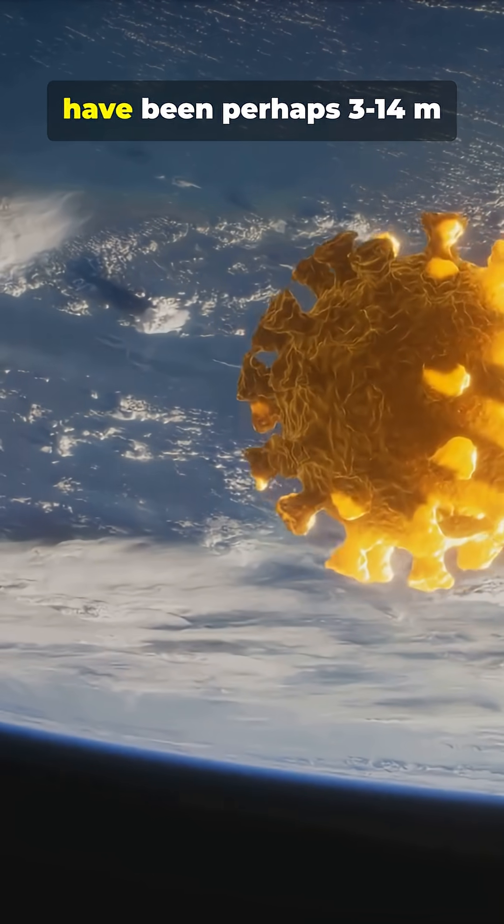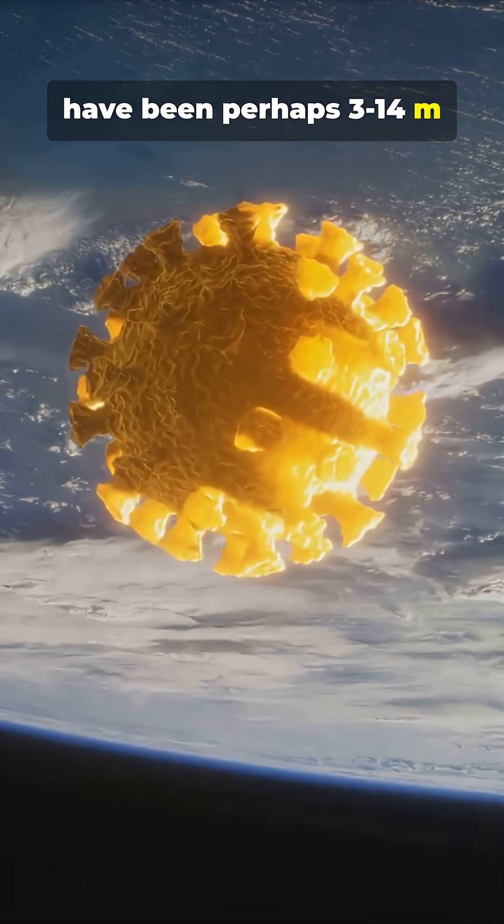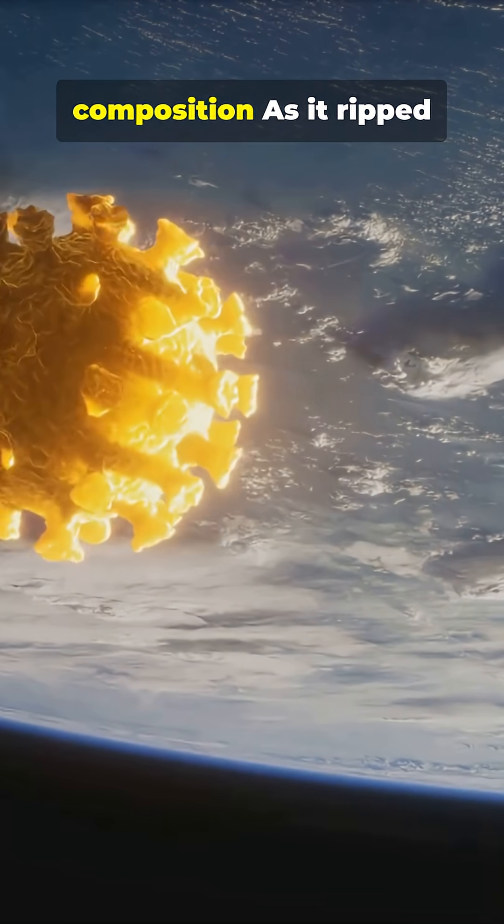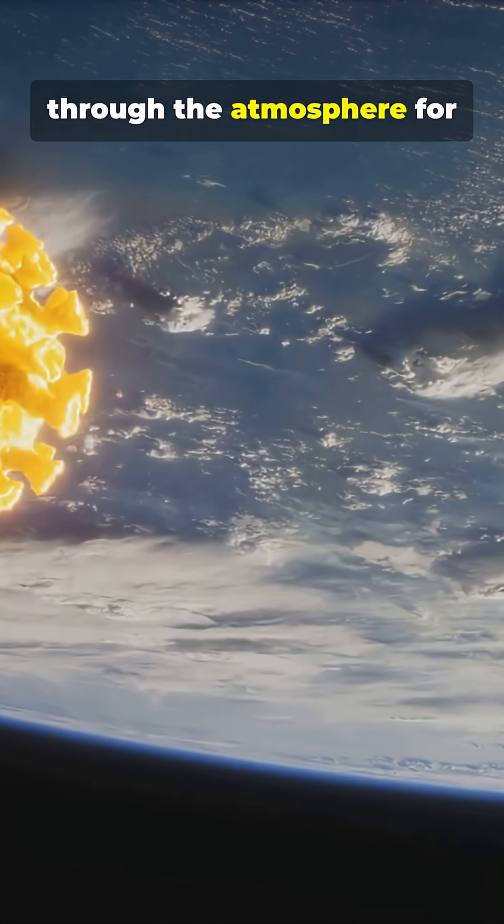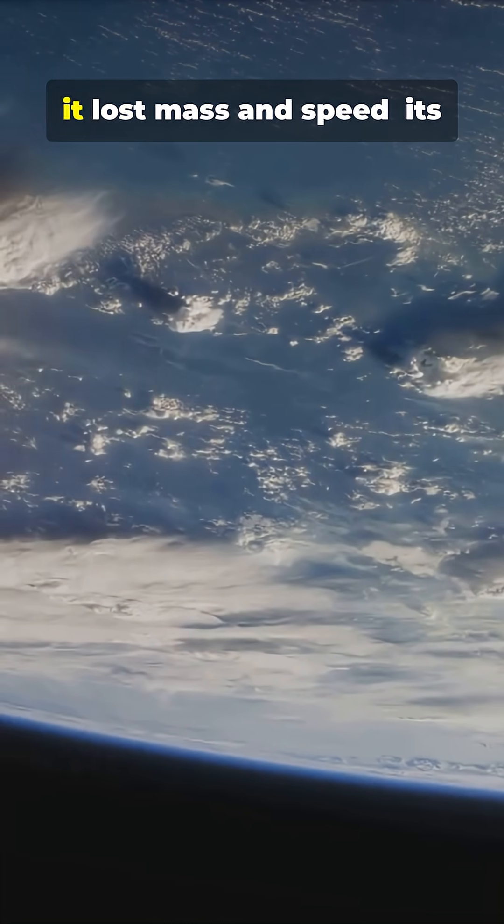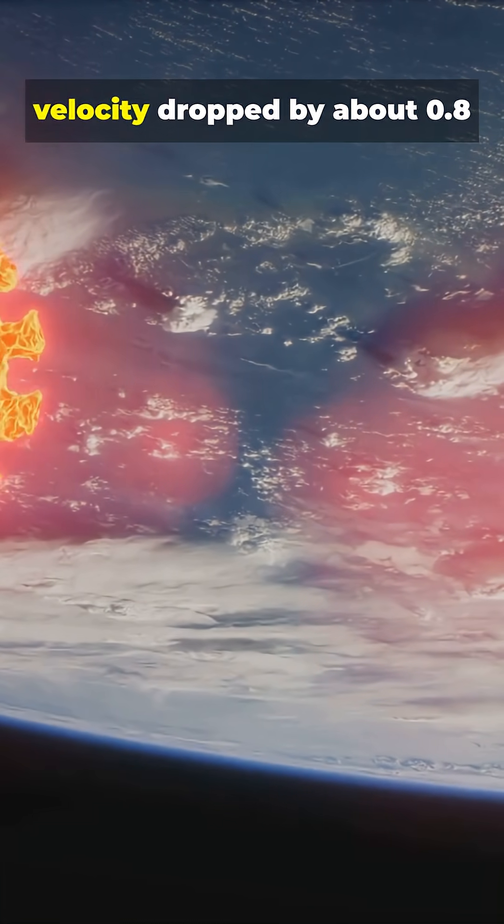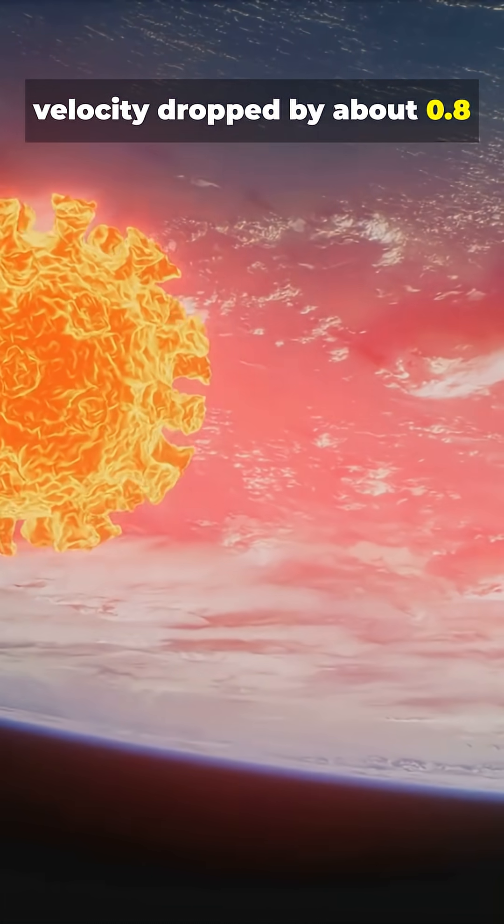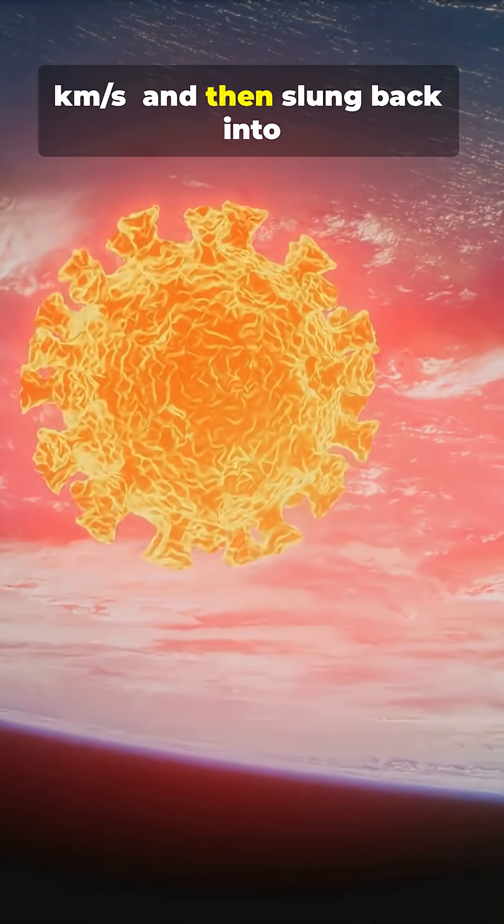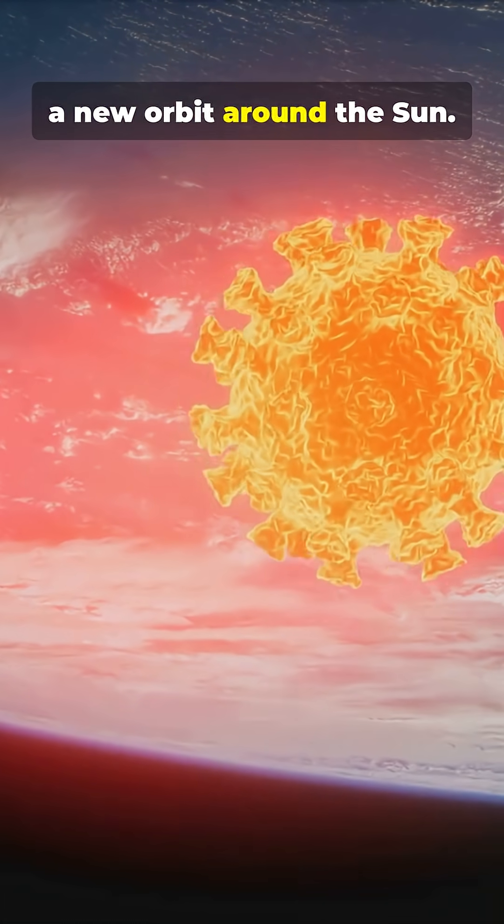The object is estimated to have been perhaps 3 to 14 miles across depending on its composition. As it ripped through the atmosphere for around 100 seconds, it lost mass and speed. Its velocity dropped by about 0.8 km/s and then slung back into a new orbit around the Sun.